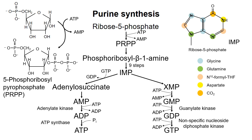Remember that ADP is phosphorylated to ATP by ATP synthase in the mitochondrion, which provides energy for the purine synthesis process.